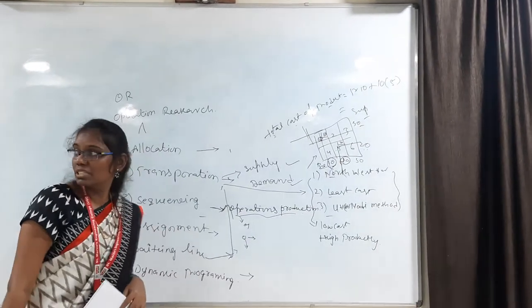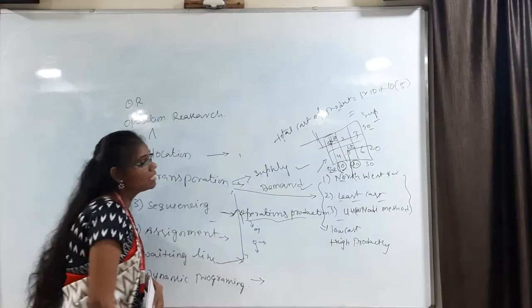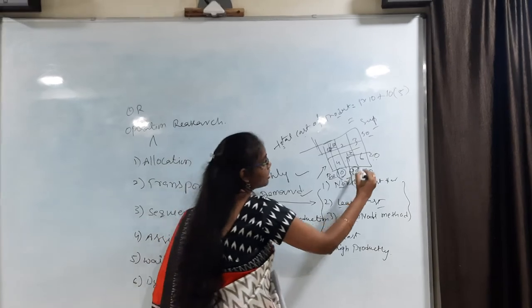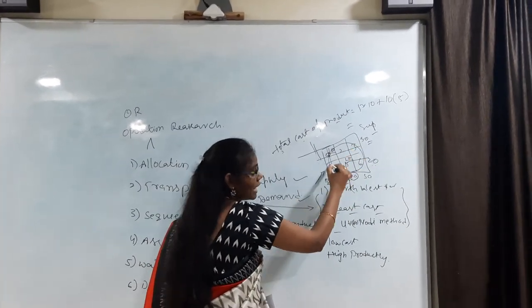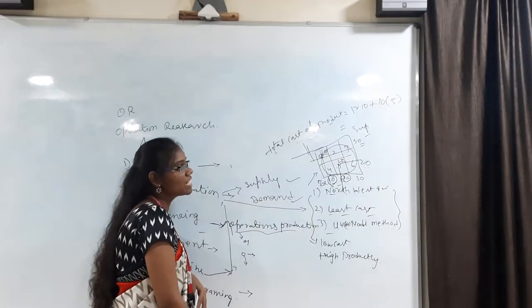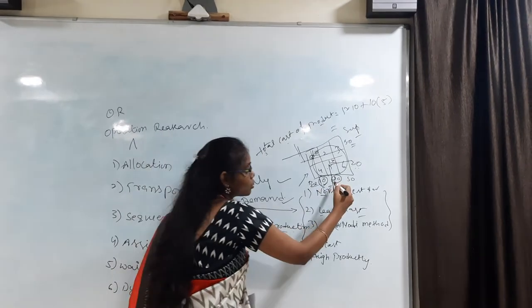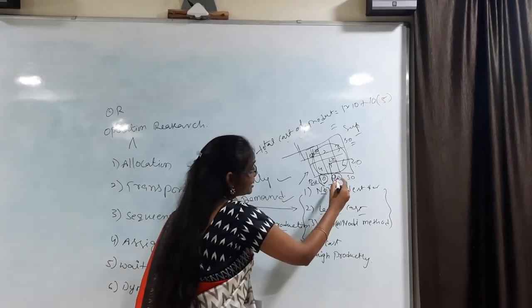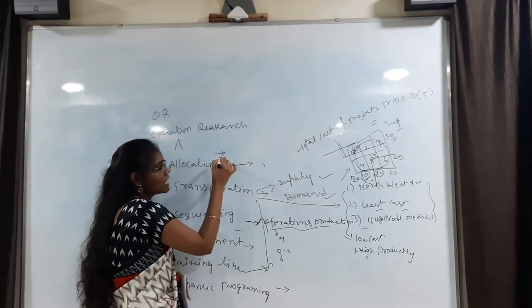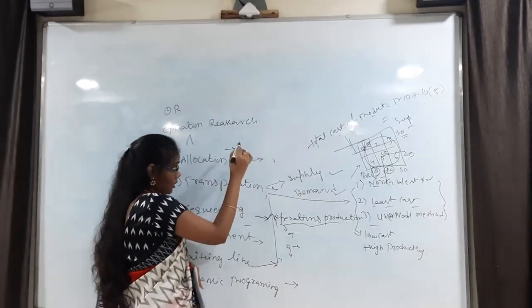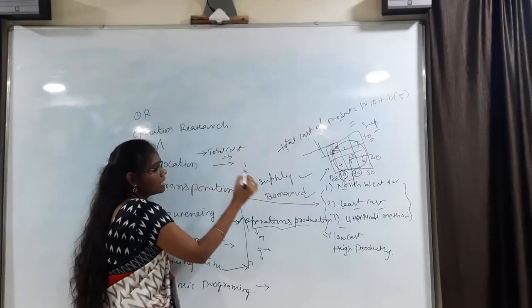Next, we move on to the Least Cost method. Here also we find out the least value of the demand and supply. We first find out the total entire cells, then choose the least value of the supply and demand. We follow the same allocation rule, and the total cost equals the least value multiplied by the supply and demand value.